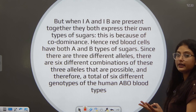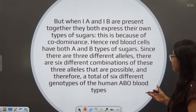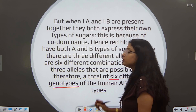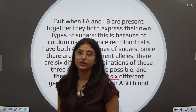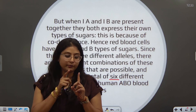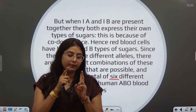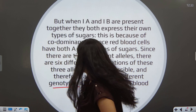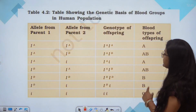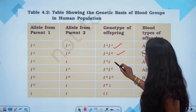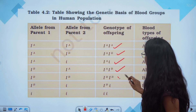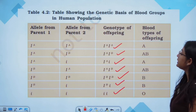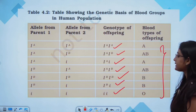Since there are three different alleles, there are six different genotype combinations possible in the human ABO blood grouping system: AA, AO, BB, BO, AB, and OO. These are the different genotypes that offspring can have.